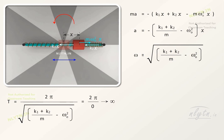Therefore, for the block to have an SHM, omega naught should be strictly less than this value.